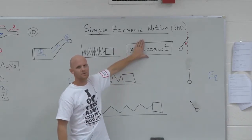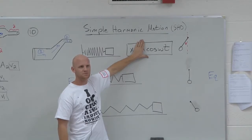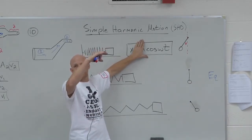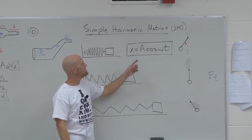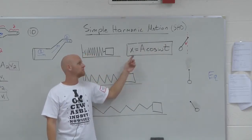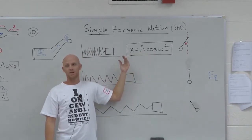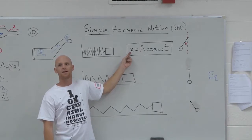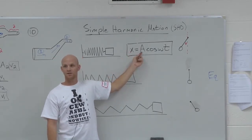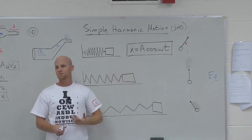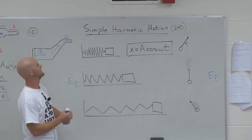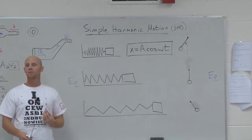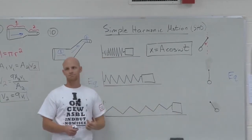If we look at the cosine function, what are its minimums and maximums? It oscillates between negative one and positive one. So the entire function x = A·cos(ωt) has a minimum of negative A and a maximum of positive A. That's why we call it A — because A stands for amplitude, which we define as the maximum displacement. The displacement away from equilibrium position is A, whether the spring is compressed or elongated.